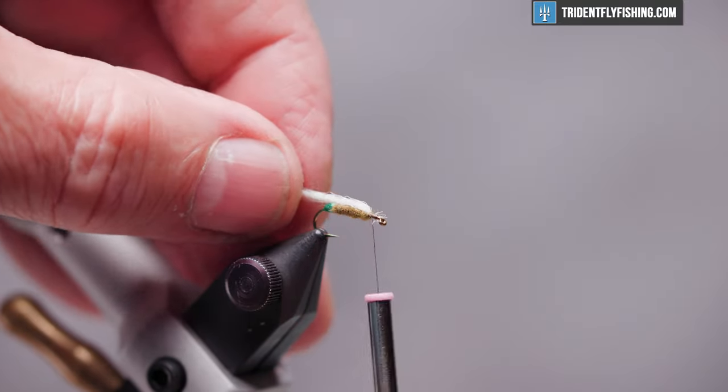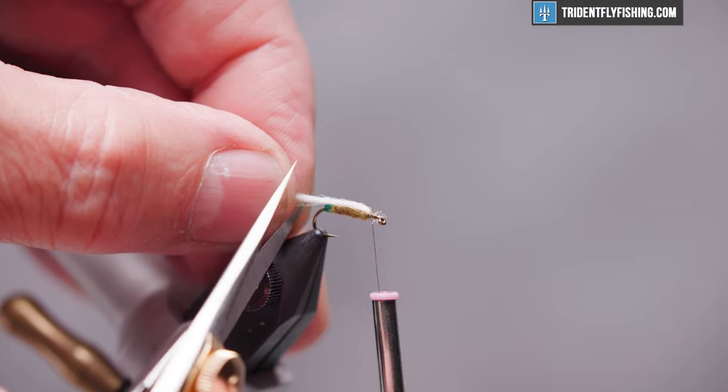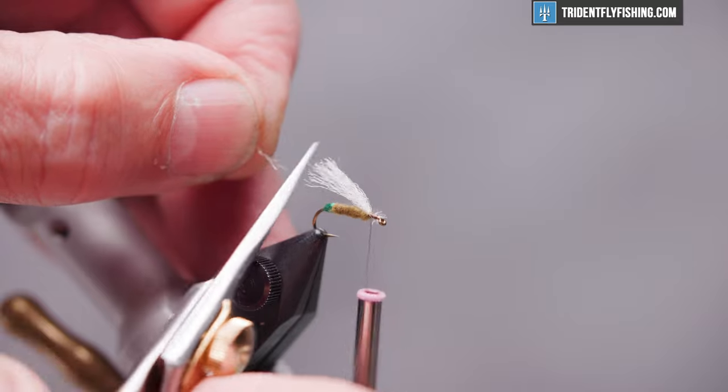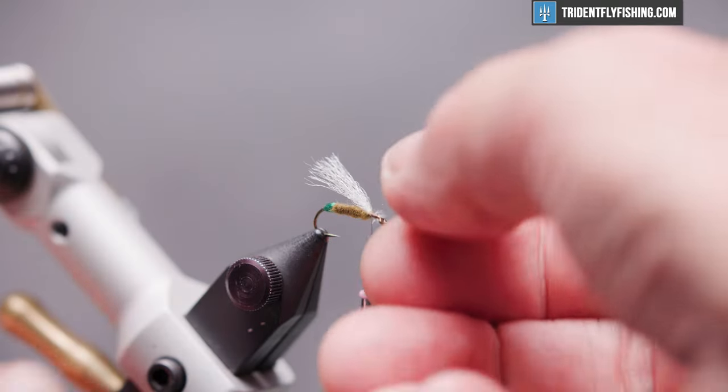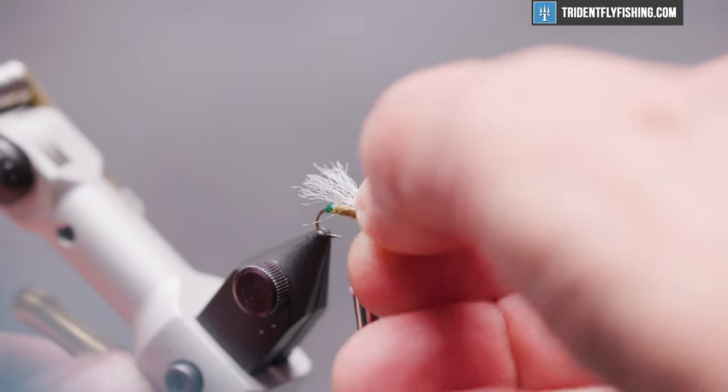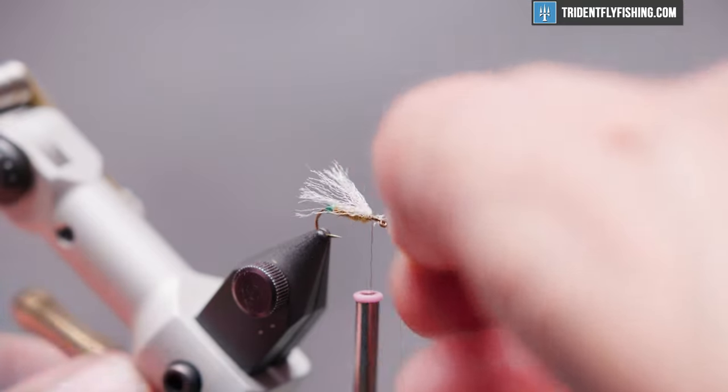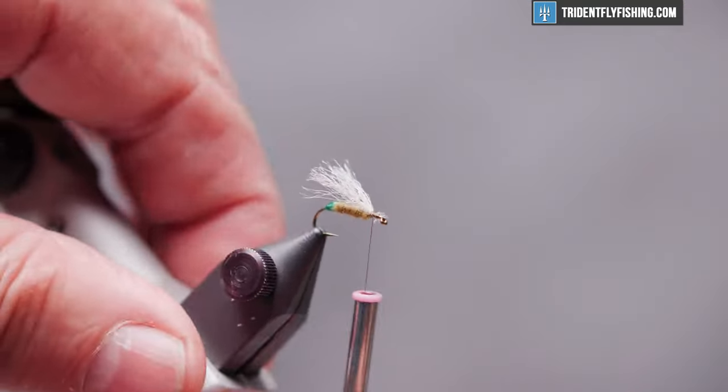Neaten that up a bit. And we want this wing to be just a little bit longer than the length of the hook. So right behind the bend of the hook, we'll cut that off. And push down on it with your thumb. That will kind of fan it out.